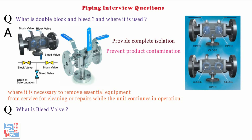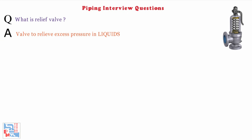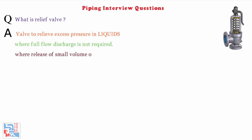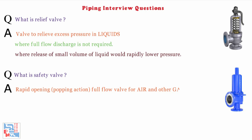Next: What is a bleed valve? A small valve provided for drawing off liquid; in layman's terms we call it a drain valve. Next: What is a relief valve? A valve to relieve excess pressure in liquids in situations where full flow discharge is not required, where release of a small volume of liquid would rapidly lower pressure. Next: What is a safety valve? Rapid opening, popping action, full flow valve for air and other gases. Relief valves are used in liquids whereas safety valves are used in gases and vapours.